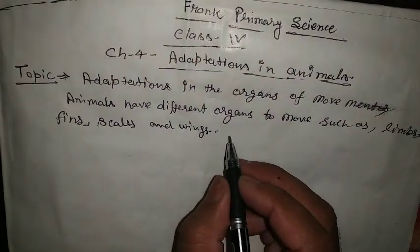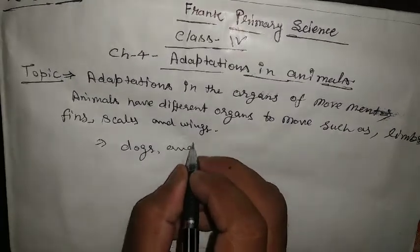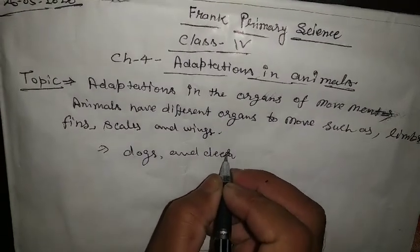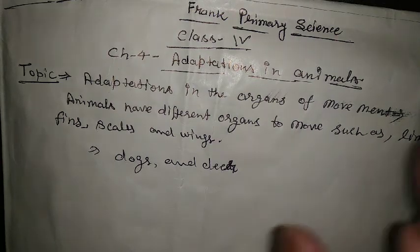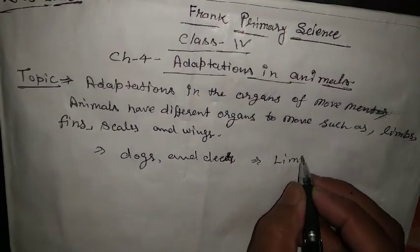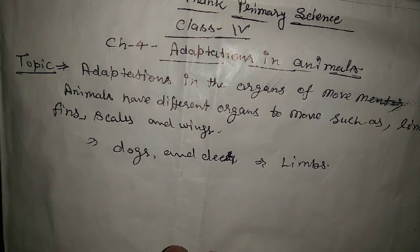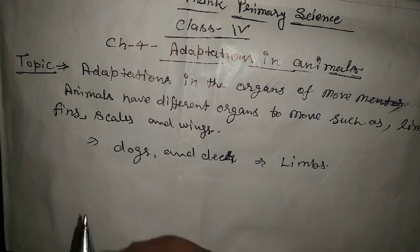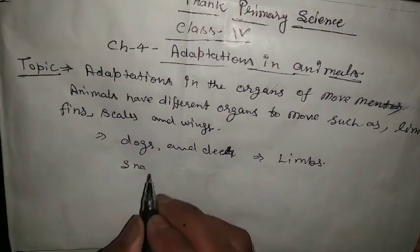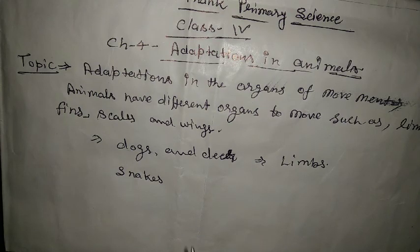Animals such as dogs and deer move with the help of their limbs. Limbs are helpful in catching their prey. Some animals such as snakes have no limbs.